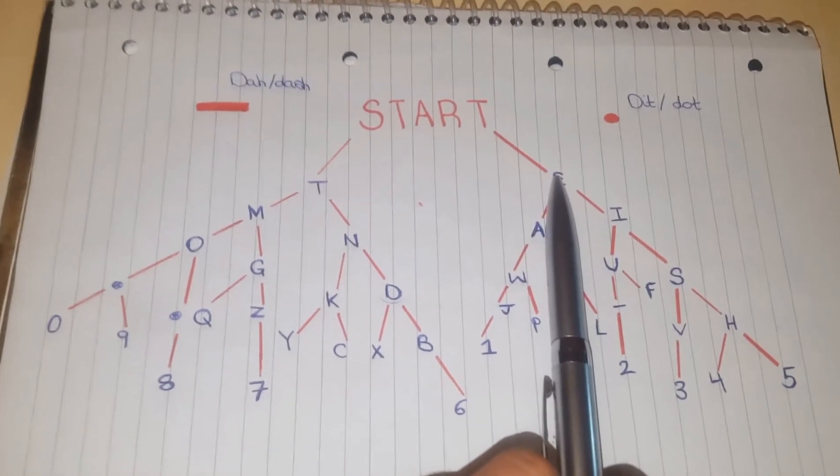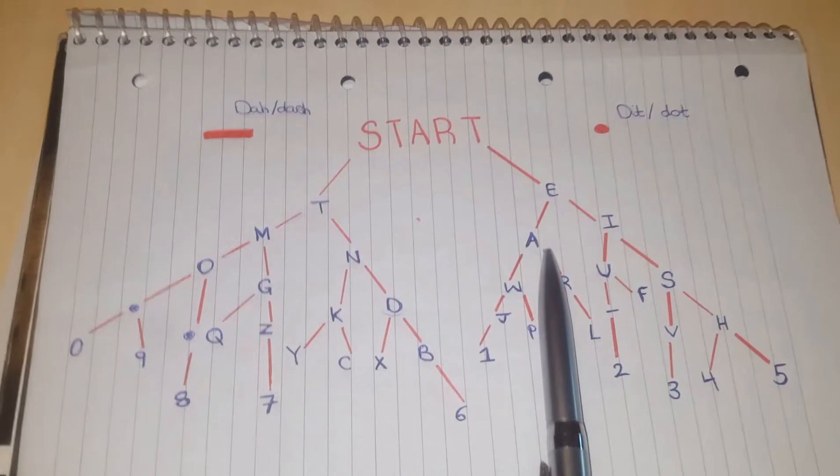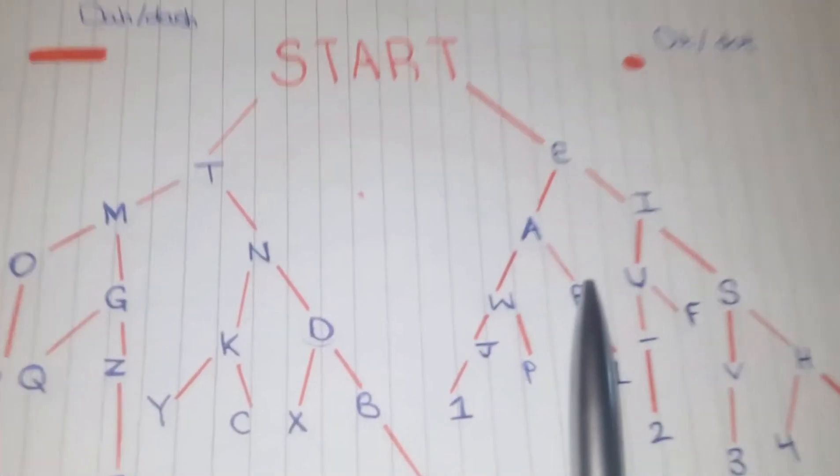So, that'll be a dot, because I'm changing direction, turning to a dash. Because I'm changing direction again, it'll turn into a dot. So, it is super easy.